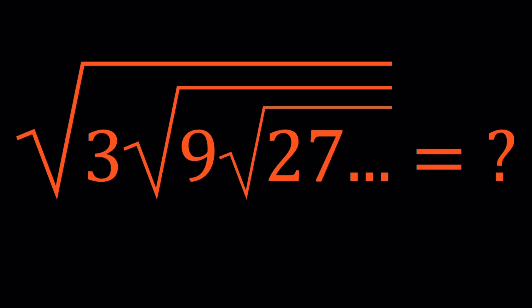Hello everyone. In this video, we're going to be evaluating an infinite radical. We have the square root of 3 times the square root of 9 times the square root of 27 times the square root of 81, and so forth. So these are powers of 3 starting with 3 to the first power, and we have these nested square roots that go on forever. This is an infinite expression — an infinite radical — and we're going to find a numerical value for it.